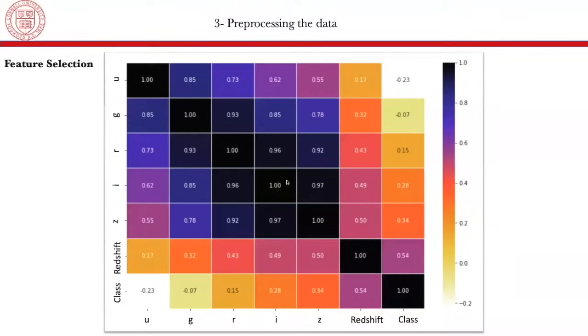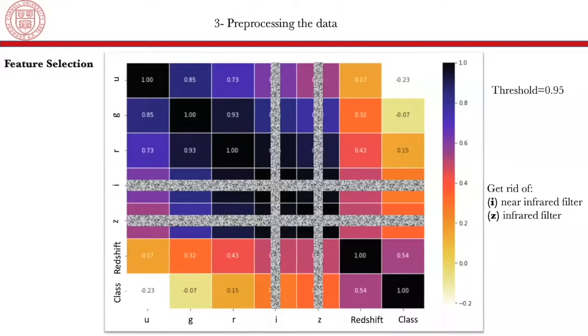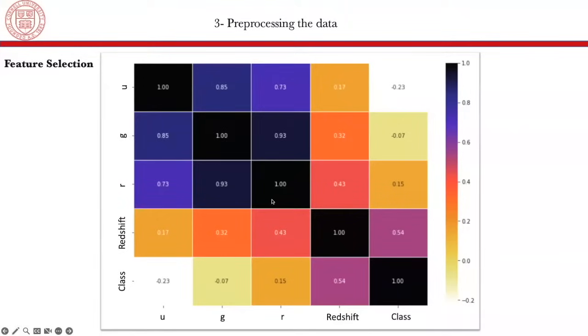So in my work, I started by doing some feature selection of the data. So here is the correlation matrix. And we can see that there is a very high correlation between different features in the photometric data. So I imposed a threshold of 0.95. And we see here that the filters, the red filter, the near infrared and the infrared filters are very correlated. So we can get rid of two of them. In this case, we get rid of the near infrared filter and the infrared filter. So we end up with three different filters plus the red shift. So we have four values and based on these four values, we will do our classification.